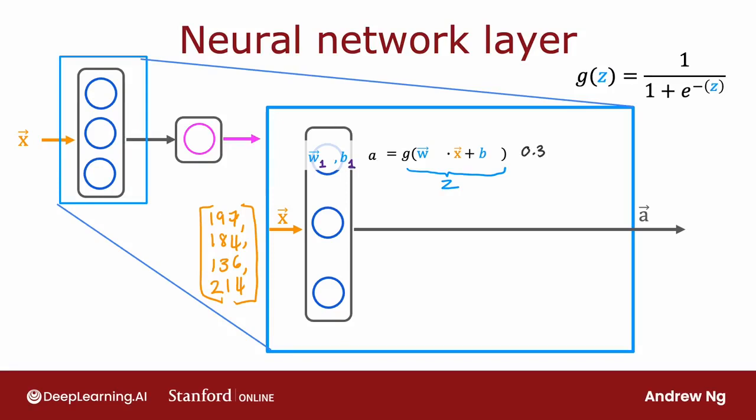To denote that this is the first neuron, I'm also going to add a subscript, so a1 may be a number like 0.3 — just a 0.3 chance of this being highly affordable based on the input features.